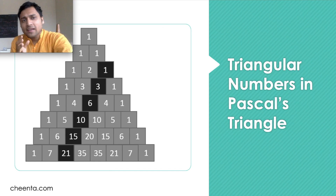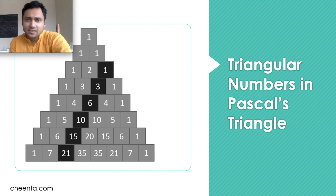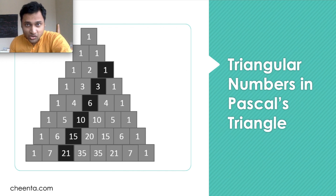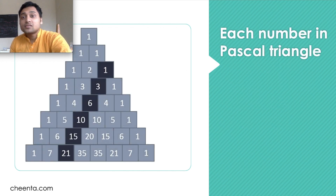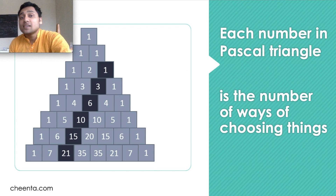If you have seen Pascal's Triangle before, great. If not, this is a picture of Pascal's Triangle — a very famous drawing in the world of mathematics. It was not discovered by Pascal; it was actually discovered by an Indian mathematician called Halyud in the 11th century. The triangular numbers appear in Pascal's Triangle very naturally — we have darkened them in the picture. Each number in Pascal's Triangle is the number of ways of choosing things.